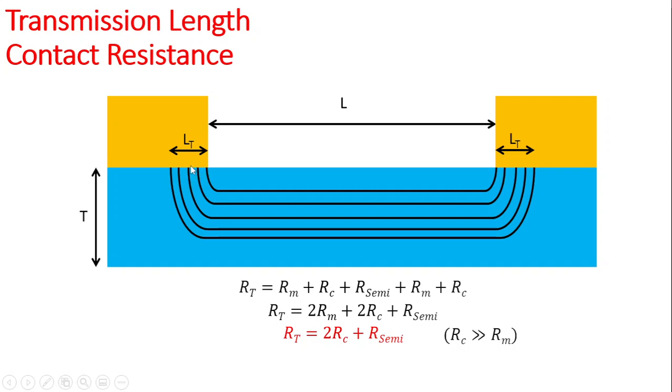...because of the connection between the electrode and the semiconductor. So in the real case, your total resistance will be the sum of the contact resistance, the resistance offered by the metal or electrode, and your semiconductor.